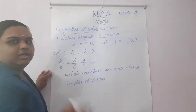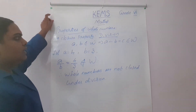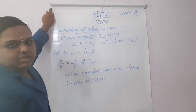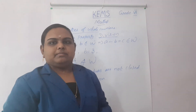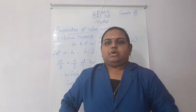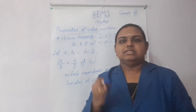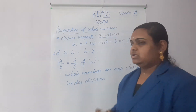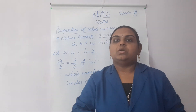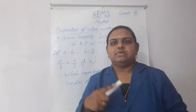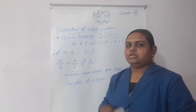Only addition and multiplication are closed. The closure property is only applicable for addition and multiplication, not for division and subtraction. So whole numbers are closed under addition and multiplication, but whole numbers are not closed under subtraction or division. Is it clear to all of you?